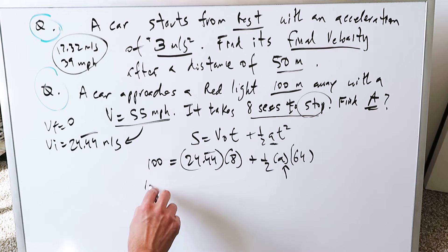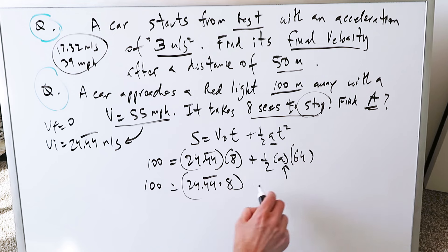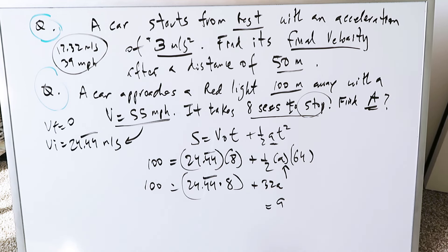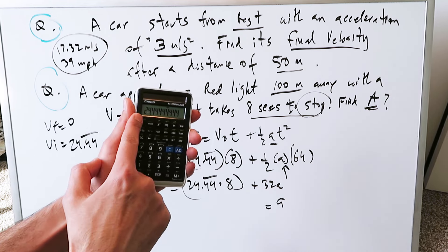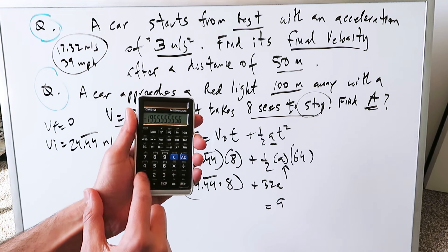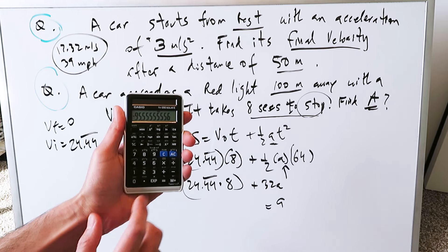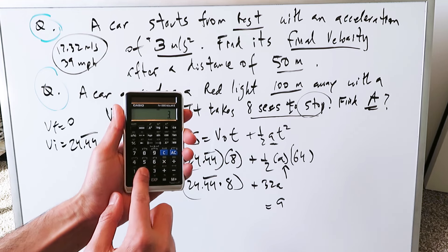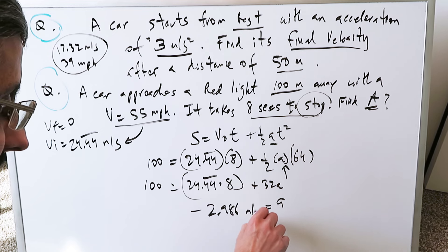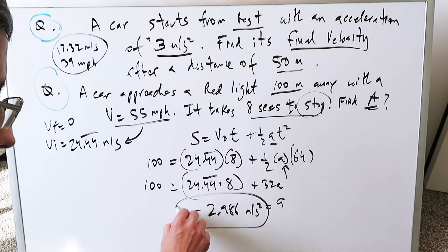You have 100 is equal to 24.44 repeating times 8 plus 64 divided by 2 is 32a. You'll solve for a. And we'll do all of this computation in one round. I have this 24.44 meters per second multiplied by 8. I'll minus it from that 100. I'm getting a minus here, but don't worry. It's good. Divided by 32, and my acceleration is minus 2.986. Let's talk about that negative. It's minus 2.986 meters per second squared. Why is this acceleration minus here?